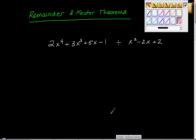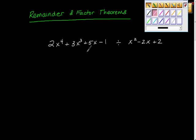I think I'm going to do this video in a couple of parts. Let's just do the first part and see if we can do some polynomial long division. So start off with a little bit of long division. Here's our problem: 2x to the 4th plus 3x cubed plus 5x minus 1, divided by x squared minus 2x plus 2.